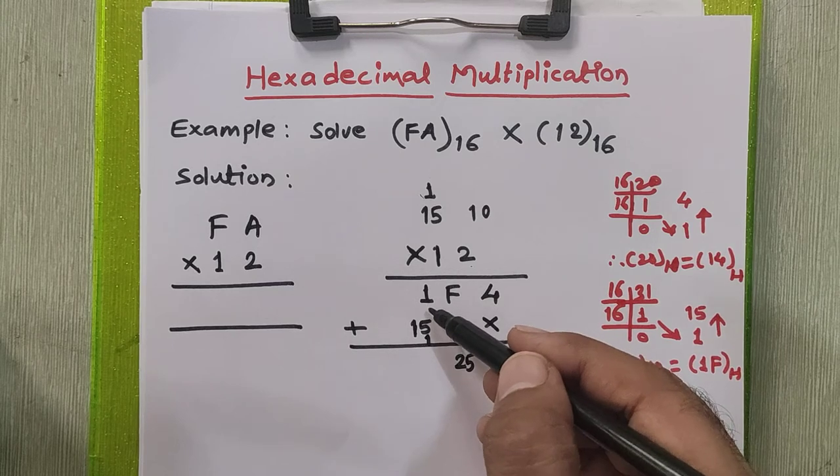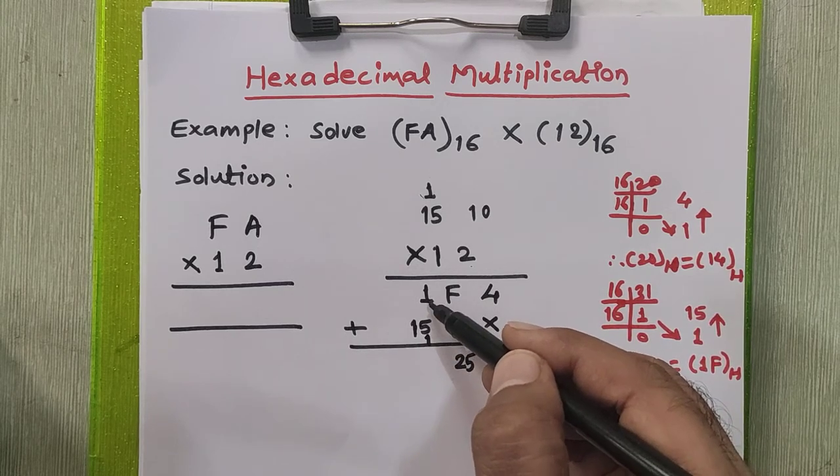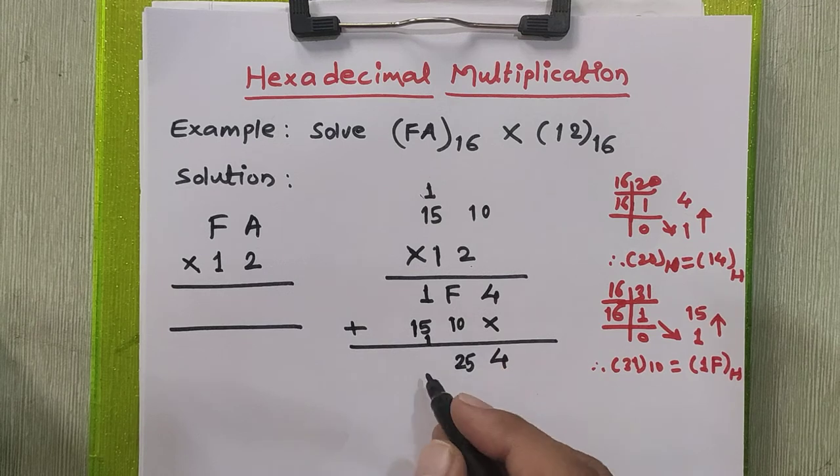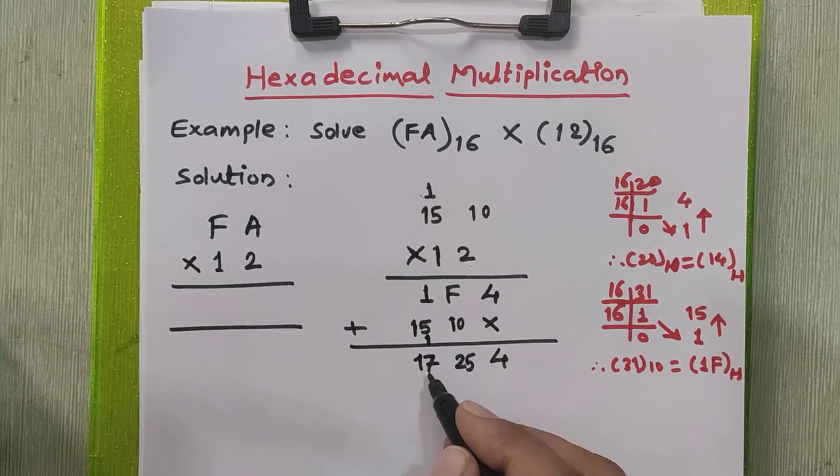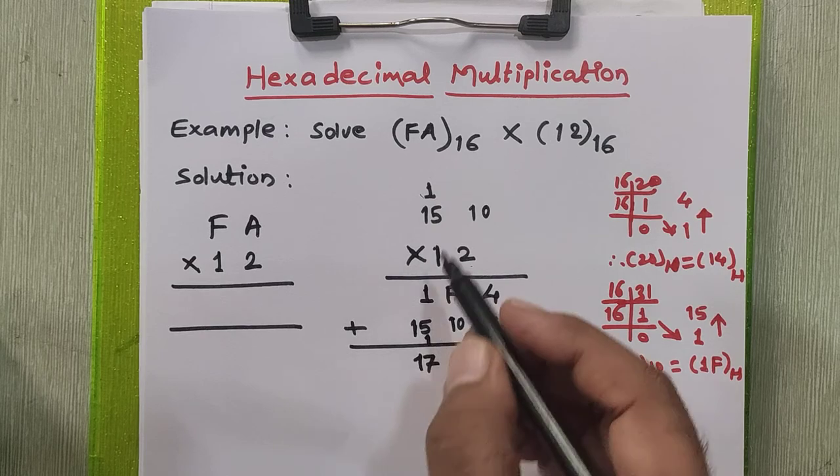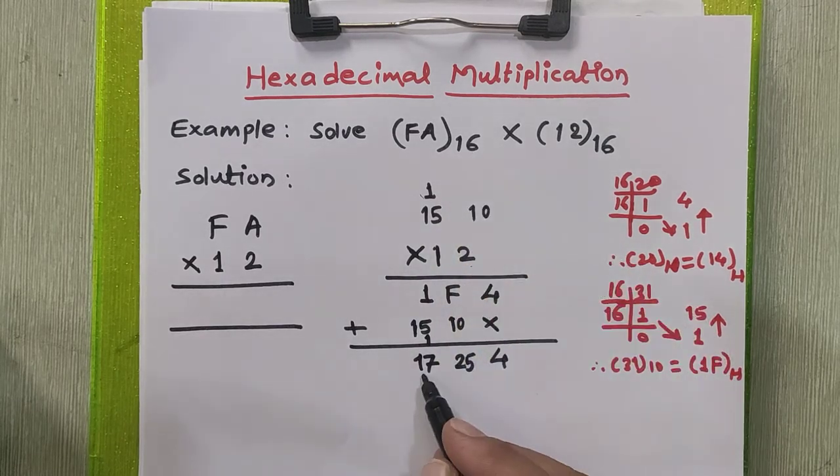Now we will add this 1, 15, and 1. So it becomes 15 plus 1 is 16 plus 1 is 17. Final answer is 17. As you see, 17 is also greater than 15, last valid number. So we need to generate a carry to the next step.